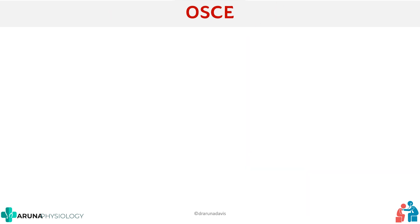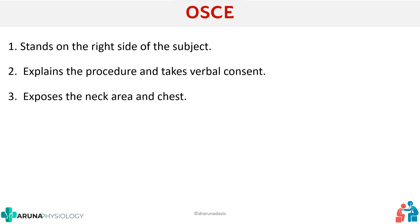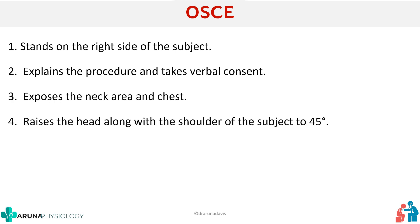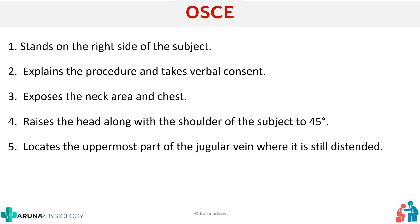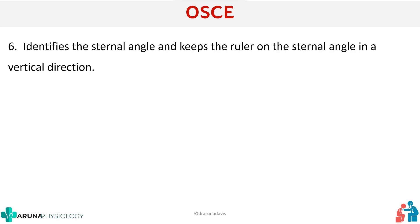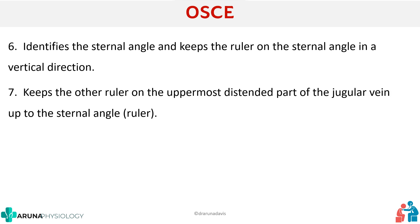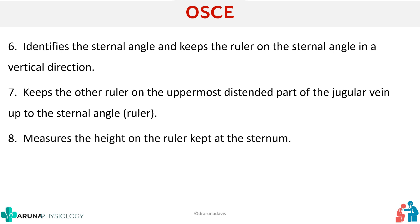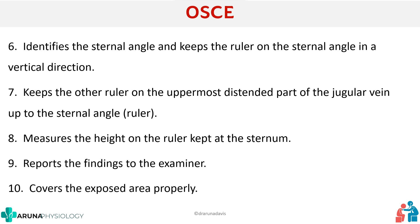The major steps for examining JVP are: stand on the right side of the subject, explain the procedure and take verbal consent, expose the neck area and chest, raise the head along with the shoulder to 45 degrees, locate the uppermost part of the jugular vein where it is still distended, identify the sternal angle, keep one ruler vertically at the sternal angle and another ruler horizontally at the uppermost distended part of the jugular vein, measure the vertical height, report findings to the examiner, and finally cover the exposed area properly.